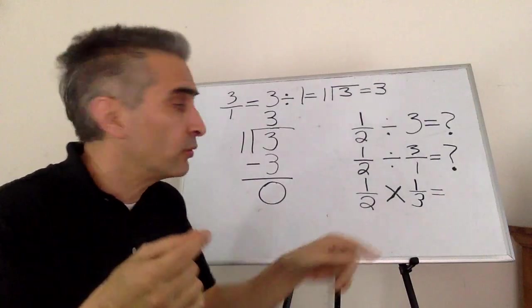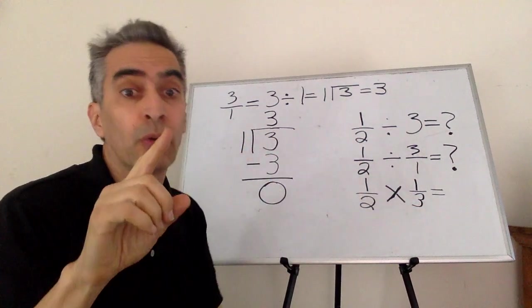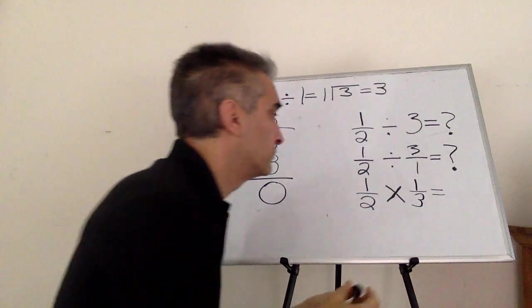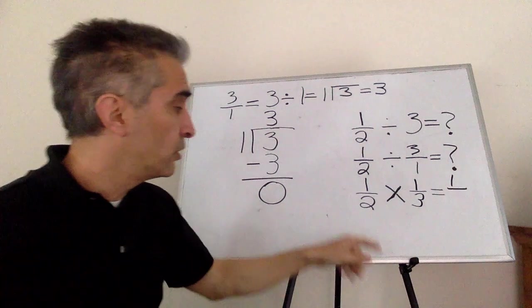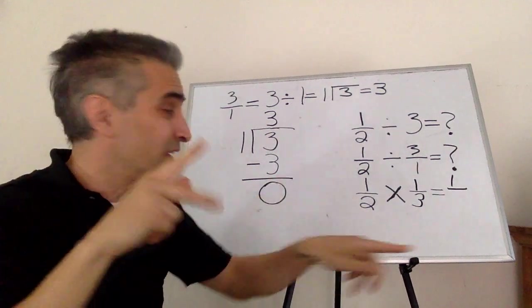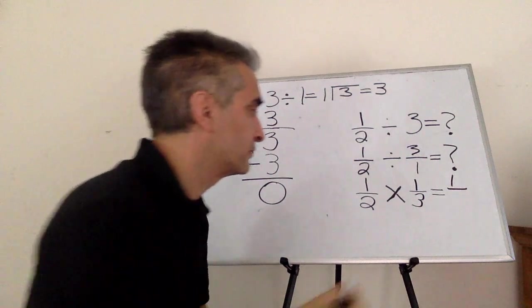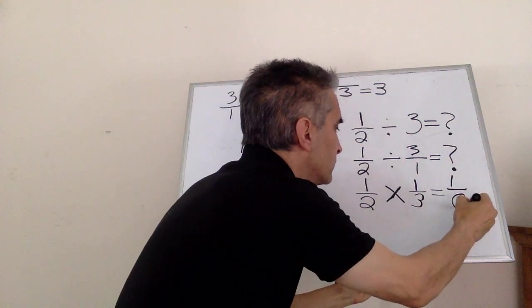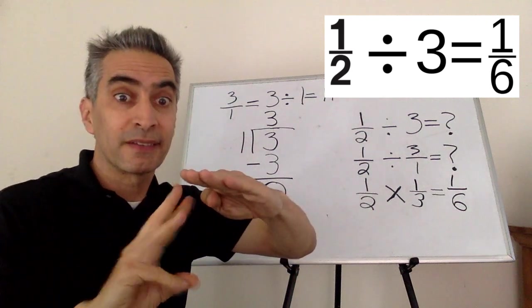Now, one times one equals one. Two times three equals six. The answer is one-sixth.